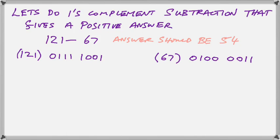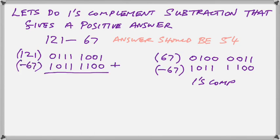By now you should be getting really good at this conversion. Then we complement all the 0's and 1's and we have our 1's complement result. So we take our 1's complement, which is negative 67, and we stick it under our positive 121.